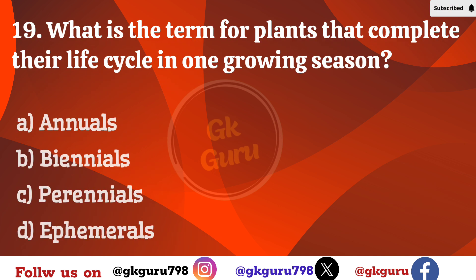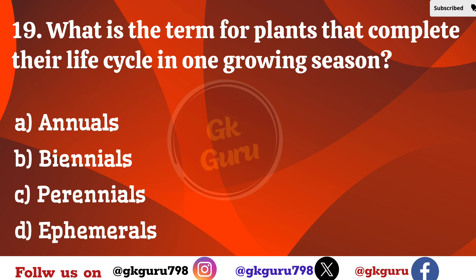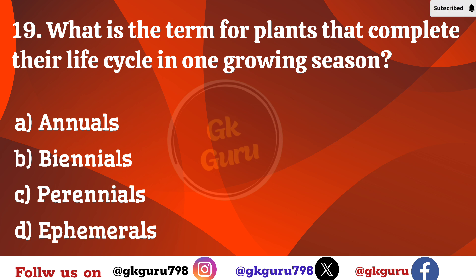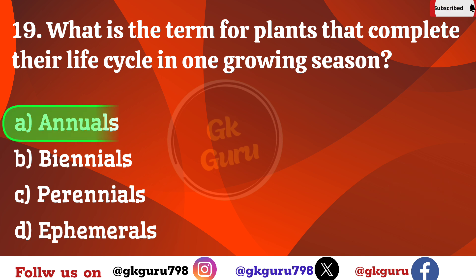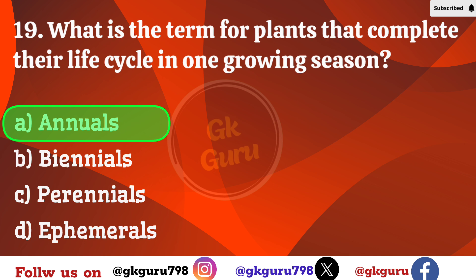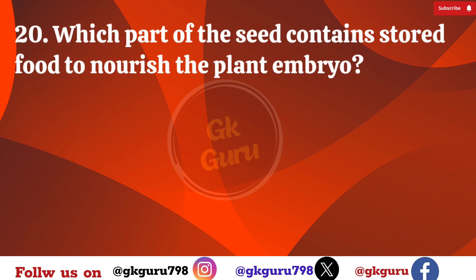19th question: What is the term for plants that complete their life cycle in one growing season? Option A: annuals. Option B: biennials. Option C: perennials. Option D: ephemerals. Correct answer: Option A, annuals.